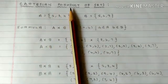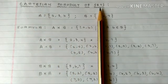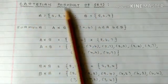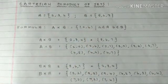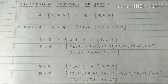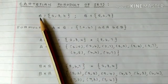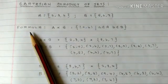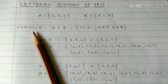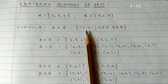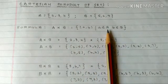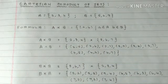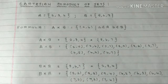Now, Cartesian product of sets. The set of all ordered pairs of elements of two sets is called the Cartesian product. The formula for Cartesian product is: A cross B = {(a, b) such that a belongs to A and b belongs to B}. We can get the Cartesian product by crossing two sets.